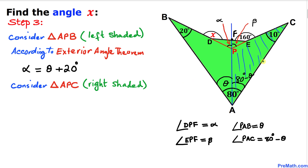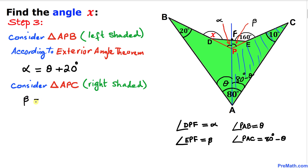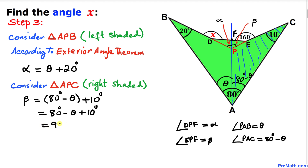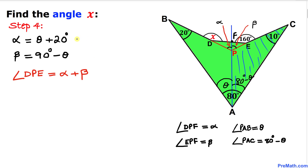Now let's consider triangle APC — the right shaded region. We can apply the same exterior angle theorem. In this case our interior angles are 80 degrees minus theta and 10 degrees, and the exterior angle is beta. Therefore beta equals (80 degrees minus theta) plus 10 degrees, which simplifies to 90 degrees minus theta.